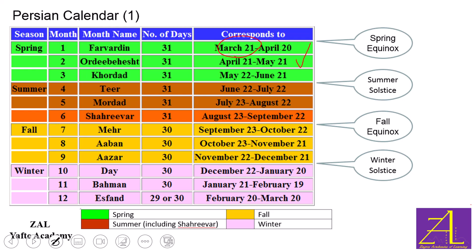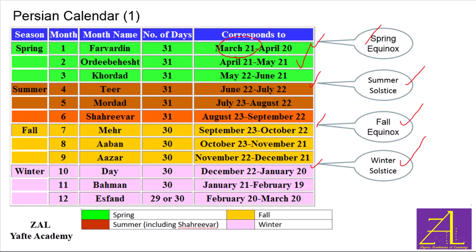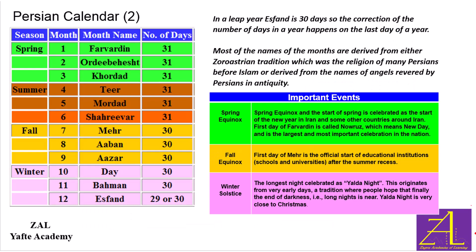March 20 or 21 is the spring equinox. The spring equinox, summer solstice, fall equinox, and winter solstice are each at the beginning of a month. The number of days in each month is also designed to align with the seasons.